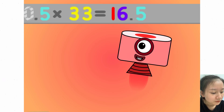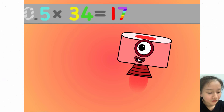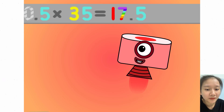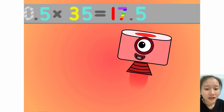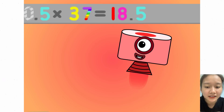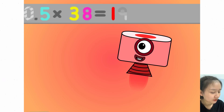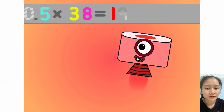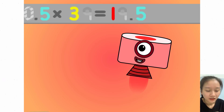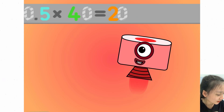0.5 times 33 equals 16.5. 0.5 times 34 equals 17. 0.5 times 35 equals 17.5. 0.5 times 36 equals 18. 0.5 times 37 equals 18.5. 0.5 times 38 equals 19. 0.5 times 39 equals 19.5. 0.5 times 40 equals 20.